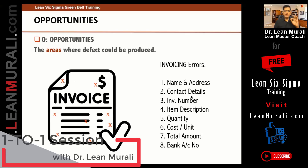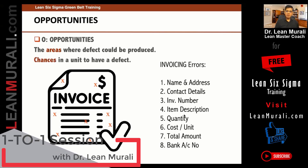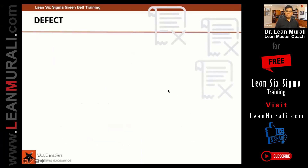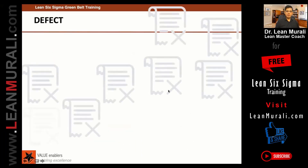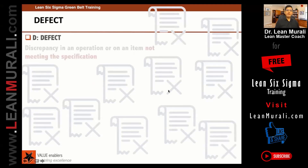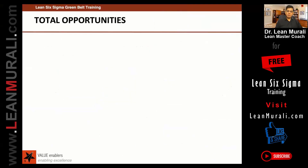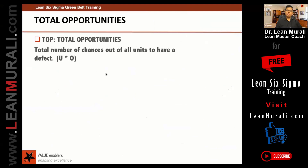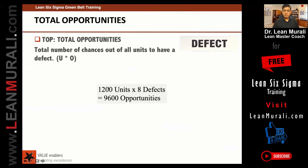We are just taking this example to help you understand. These are the chances in the unit to have a defect. A defect is a discrepancy which is not meeting the specification. Total opportunity is the total number of chances across all units to have a defect. Suppose you have 1200 units with eight possible defect areas — that gives 9600 total opportunities.